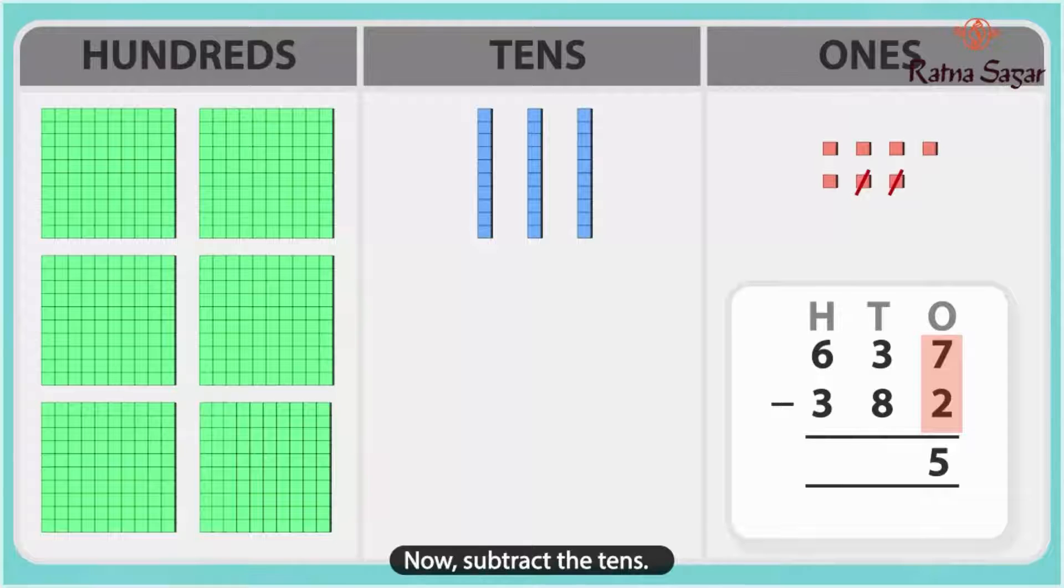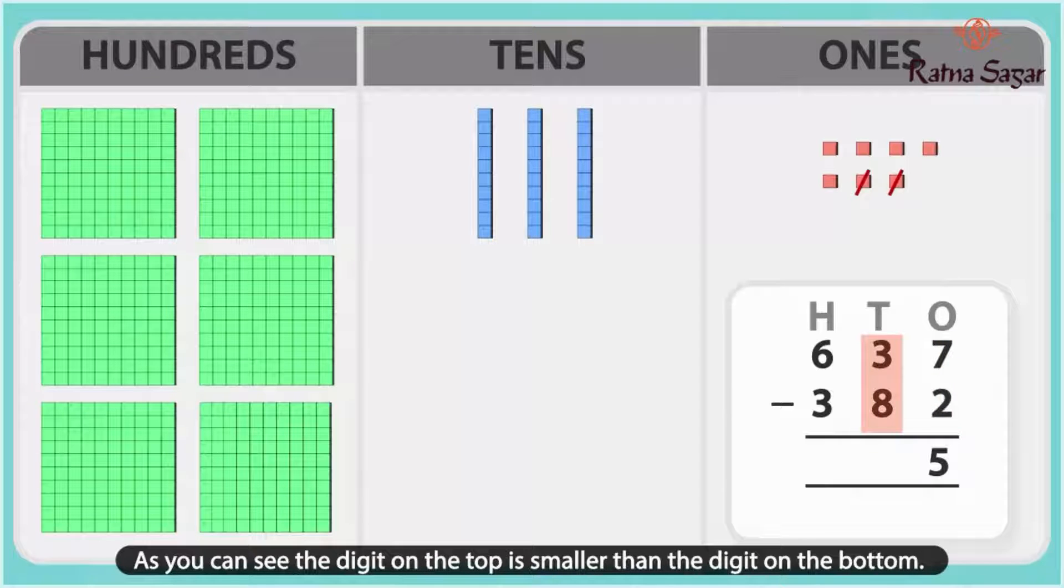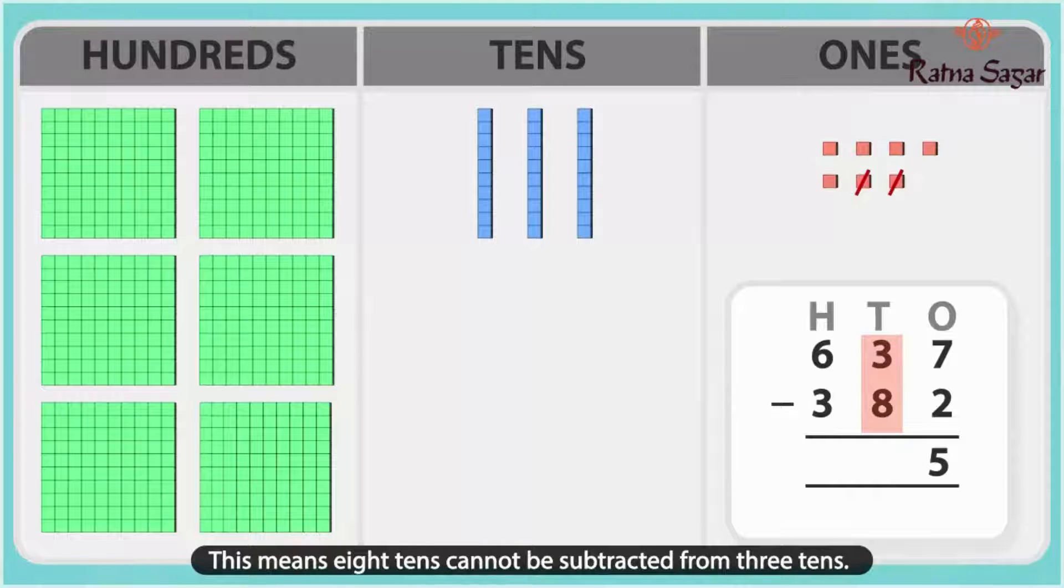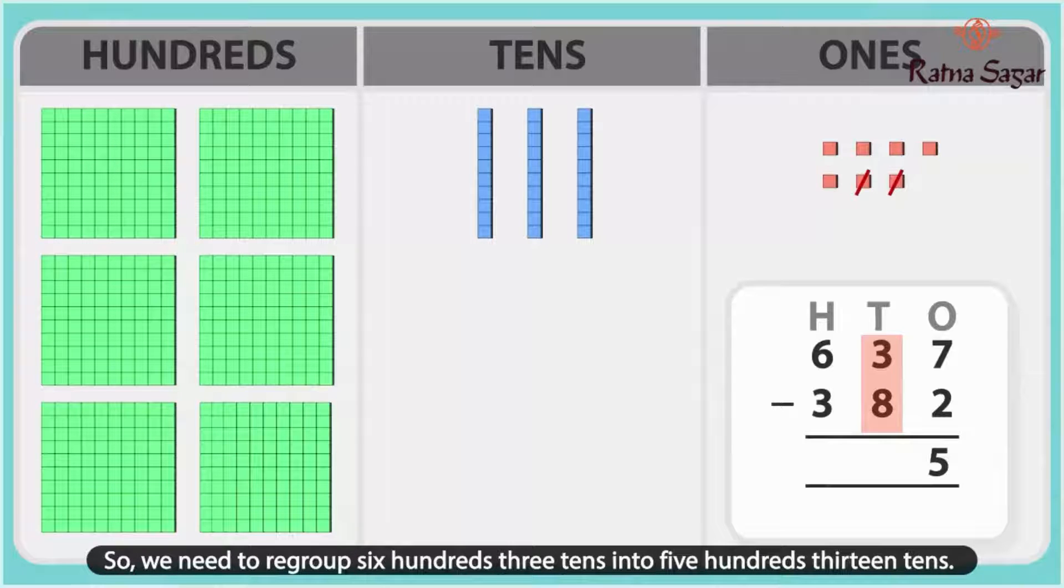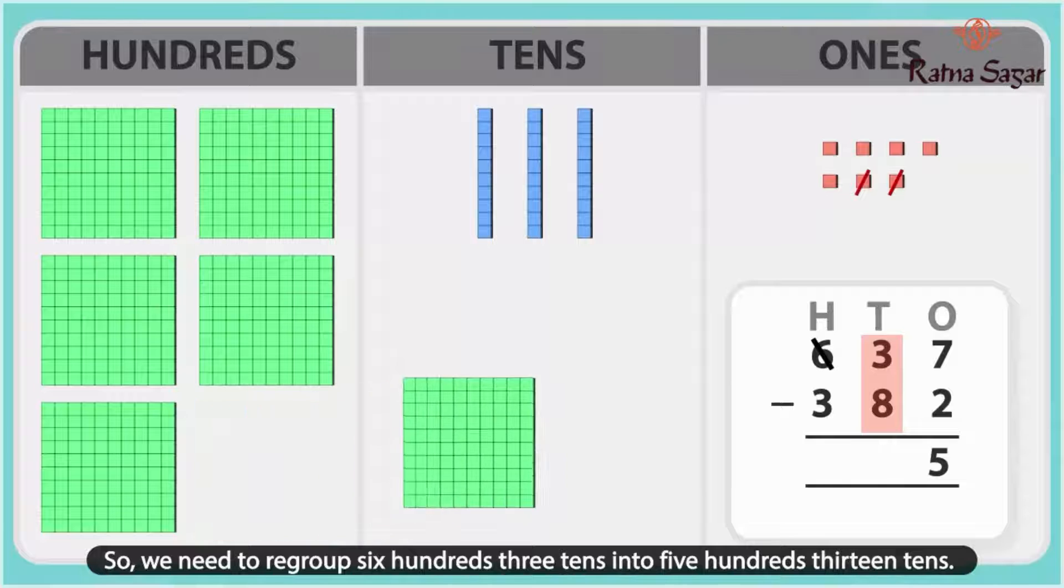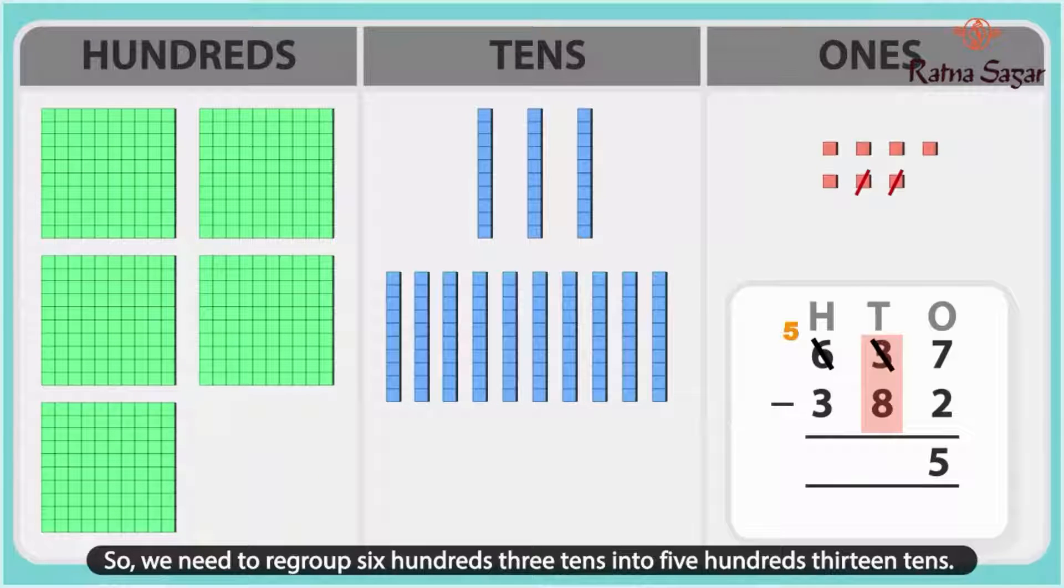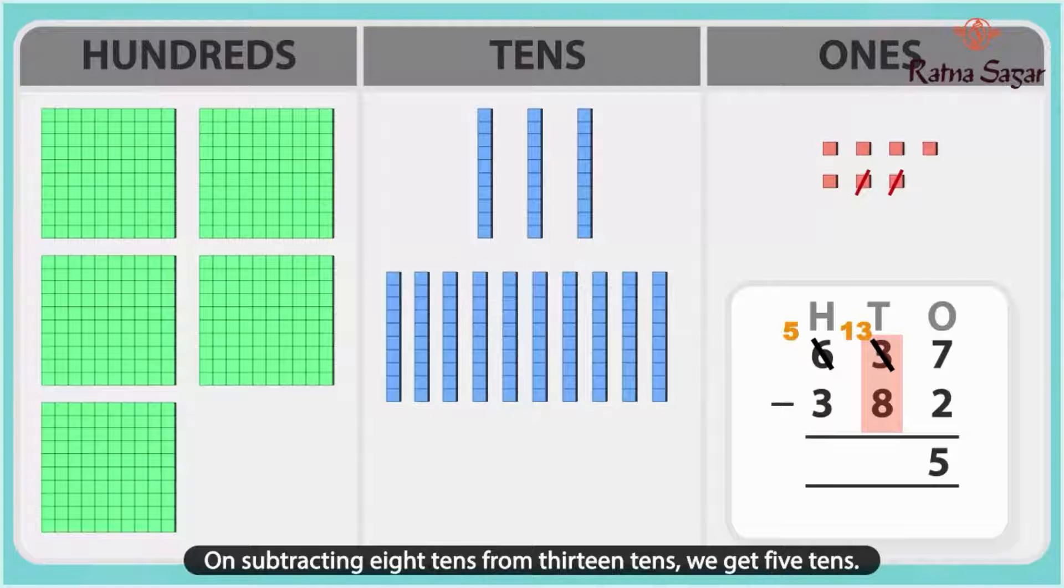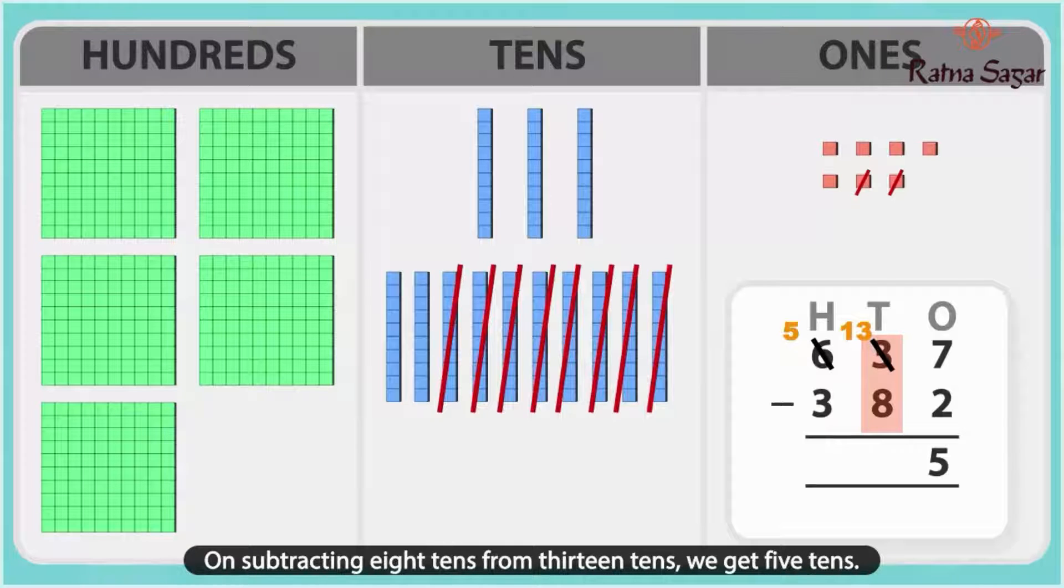Now, subtract the tens. As you can see, the digit on the top is smaller than the digit on the bottom. This means 8 tens cannot be subtracted from 3 tens. So, we need to regroup 6 hundreds 3 tens into 5 hundreds 13 tens. On subtracting 8 tens from 13 tens, we get 5 tens.